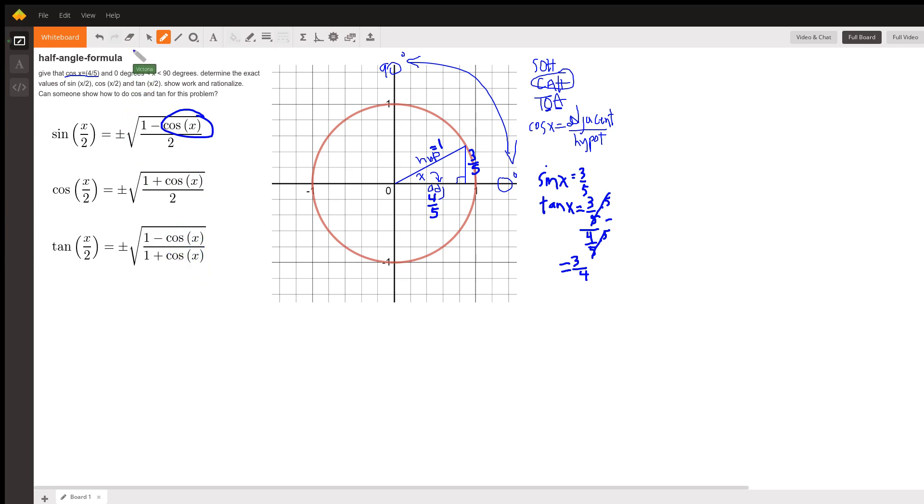So we didn't really need to go through all that, because what we could do is go plus or minus the square root of 1 minus, the cosine of x is 4 fifths over 2. Now, we have to decide plus or minus. If you're here in the first quadrant, the sine, that's the vertical, that's the y. If you make this x and y, y is positive, and y is sine. And x is cosine. So we're going to use the positive here.